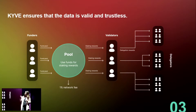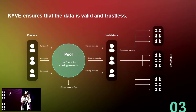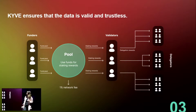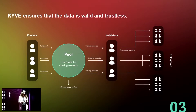The validators are rewarded with Kyve tokens if they vote correctly on the data and the data is set as valid. And of course, as a proof-of-stake network, you also have delegators — if you want to delegate but don't want to run your own nodes.